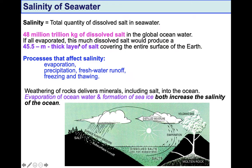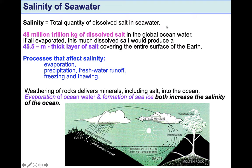Salinity of seawater is defined by the total quantity of dissolved salt in seawater. We have about 48 million trillion kilograms of dissolved salt in the global ocean water — an enormous number. If all that salt were evaporated from the ocean water, we would get a nearly 46-meter-thick layer of salt covering the entire surface of the Earth. Salinity of ocean water changes from region to region, and that change is affected by three major processes.